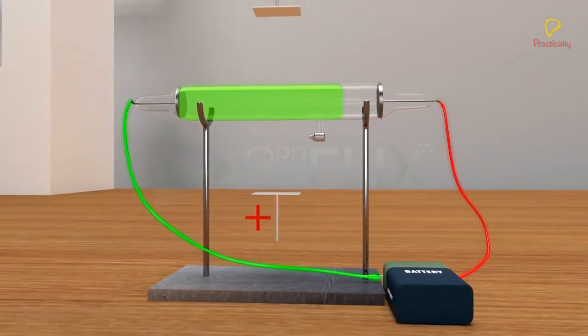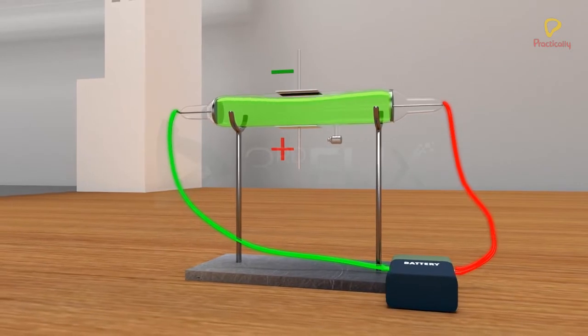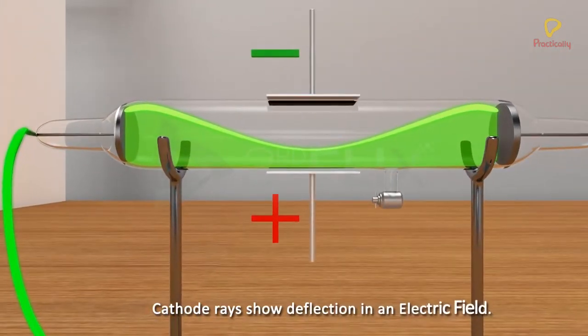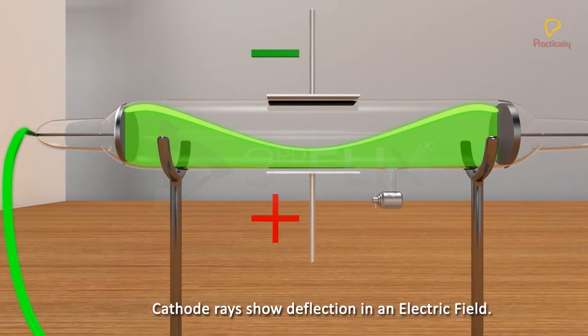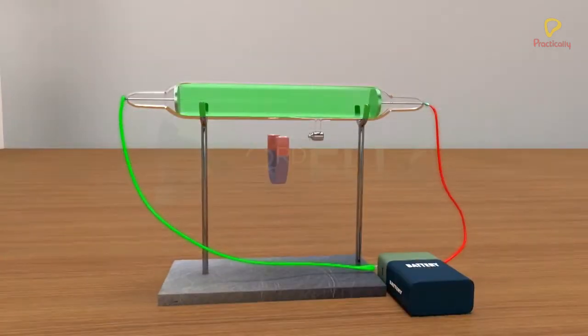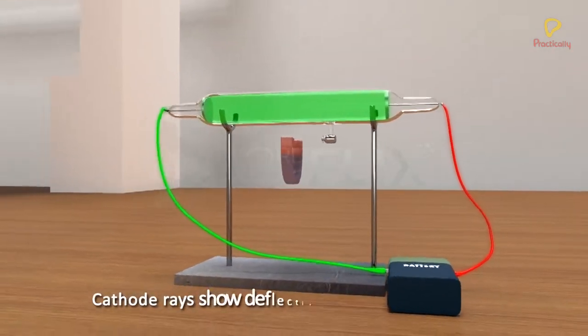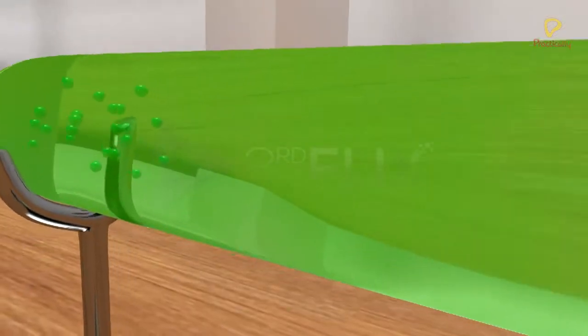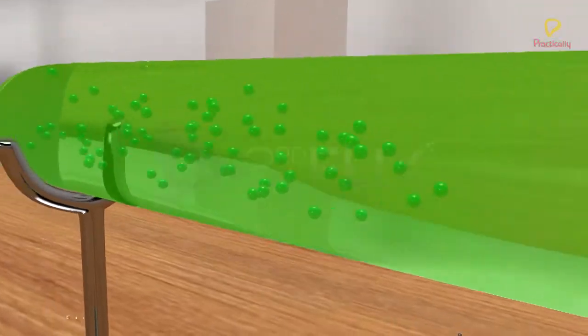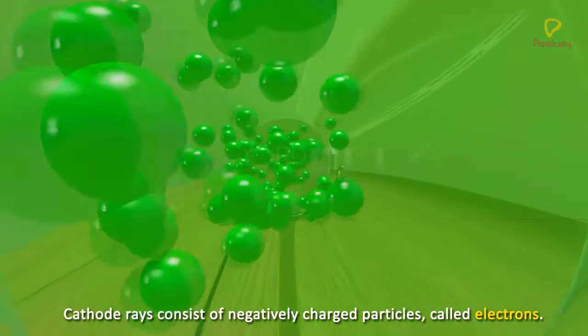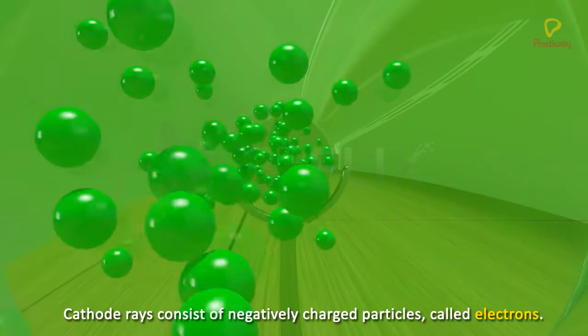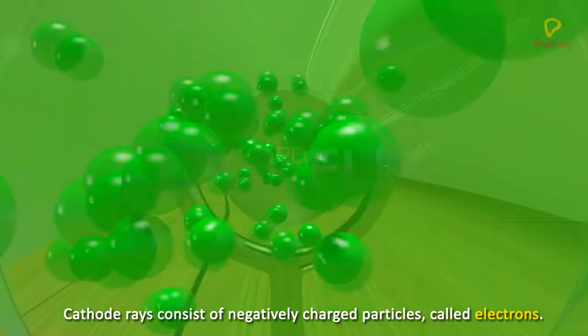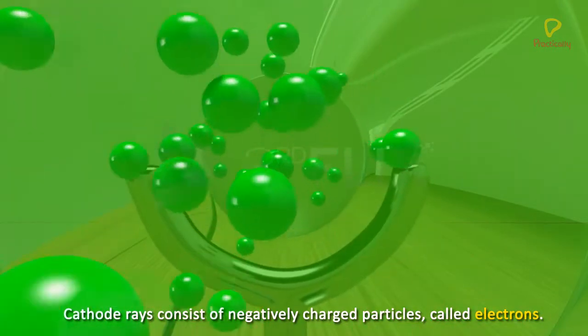However, when he applied an electric field perpendicular to the path of the cathode rays, the cathode rays were found to deflect towards the positive plate of the electric field. He observed the same result when a magnetic field was applied. As opposite charges attract and the cathode rays were found to deflect towards the anode, he concluded that cathode rays consist of negatively charged particles. He called these negatively charged particles electrons.